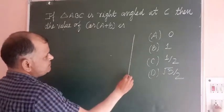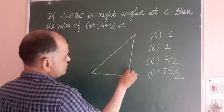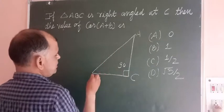So student, firstly make a triangle which is a right angle triangle at C. So C is 90 degrees here, okay, and this is angle A and this is angle B.